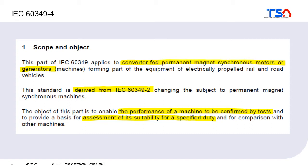This standard is connected to another part: 6349 part 2, which deals with induction machines, and part 4 deals with permanent magnet machines. Although the main parts are similar, there are some differences between the two machine types.